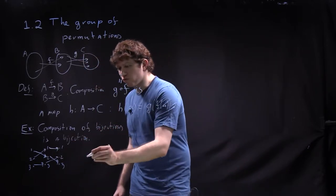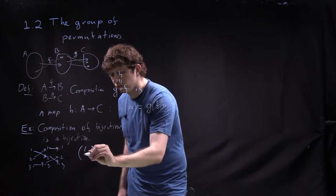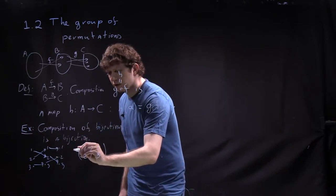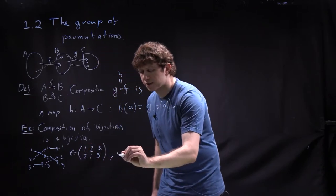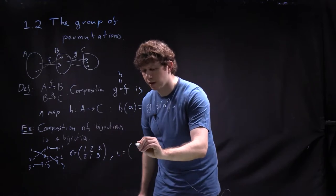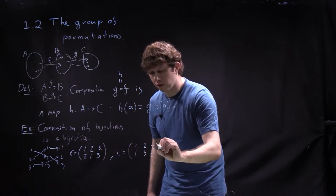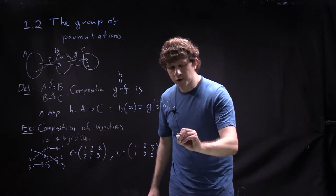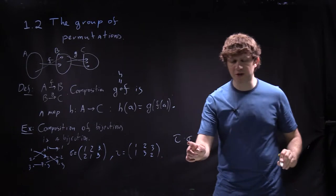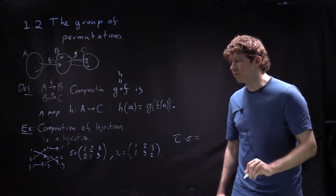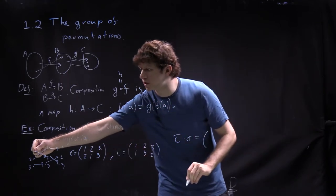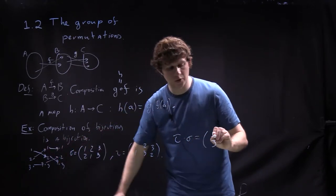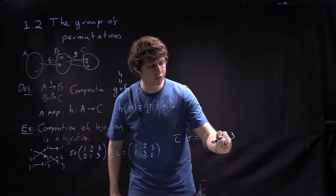Let me rewrite it. I take a permutation sigma which exchanges 1 and 2, and then there is a tau permutation sending 1 to 1, 2 to 3, 3 to 2. I can compose them. In my picture I first apply sigma to an element and then tau, so it will be tau composed with sigma. We just look where each element goes: 1 goes to 2 then to 3, so 1 goes to 3. 2 goes to 1. 3 goes to 3 then to 2.